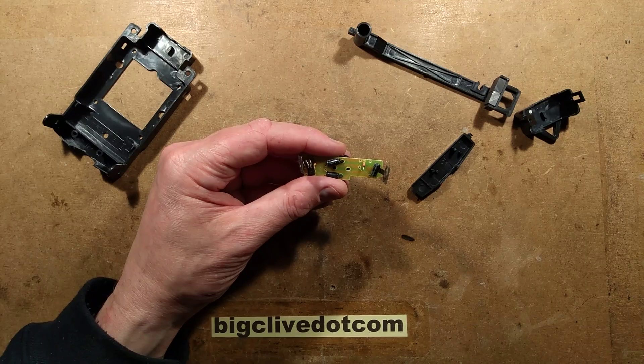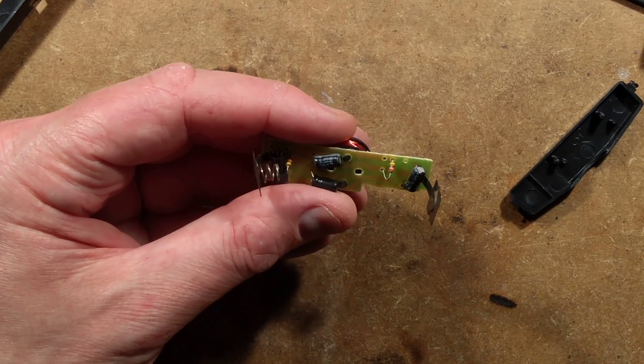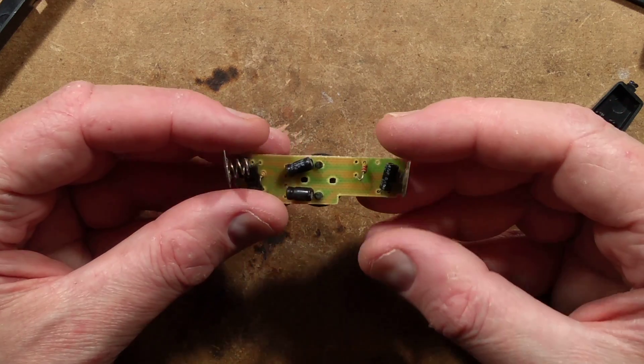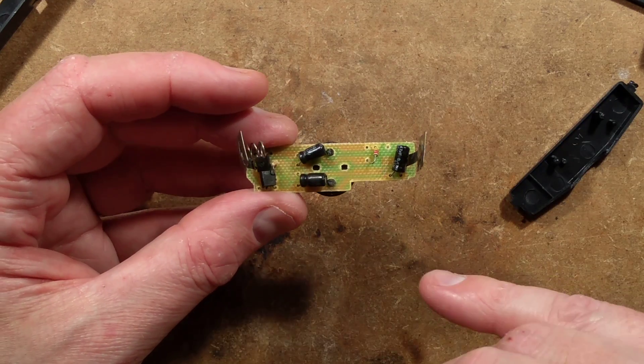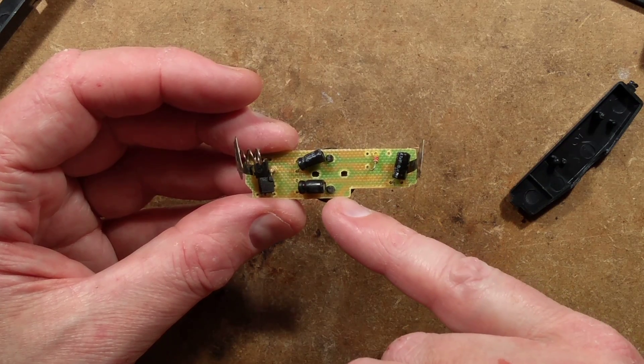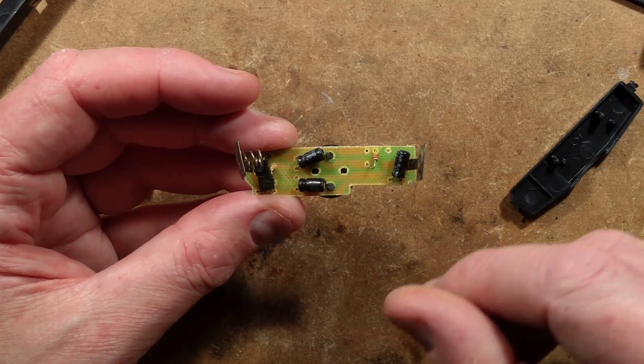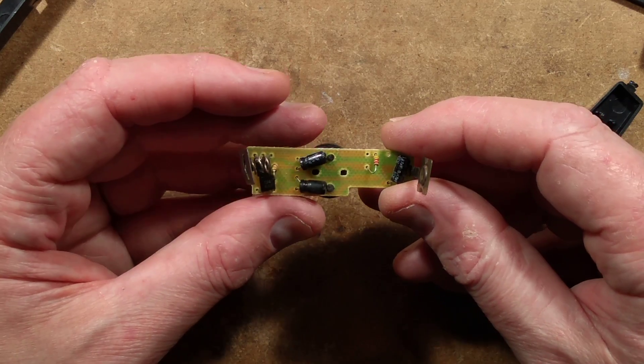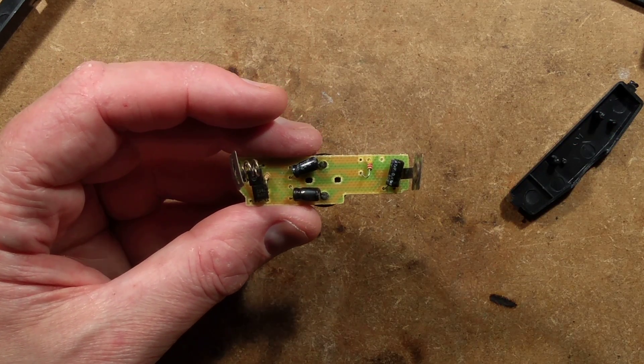I'm just about to reverse engineer it, aren't I? It is a single-sided board. It's not even got a screen print on it. Everything is kind of visible through the circuit board material, which is quite nice. I'm going to reverse engineer this and we'll explore the circuitry.